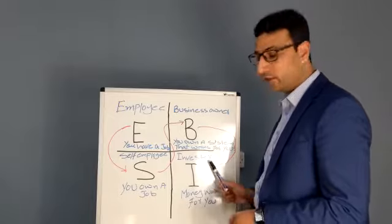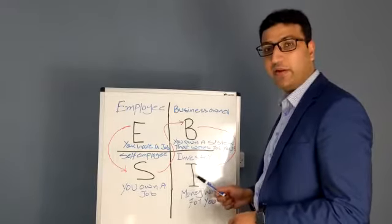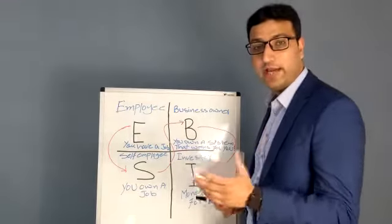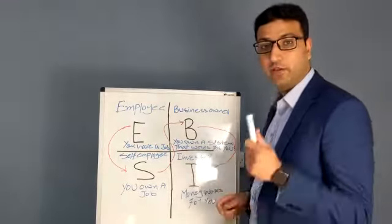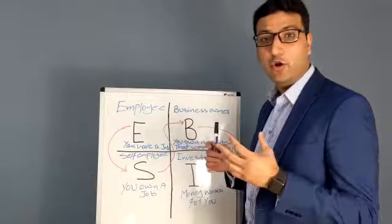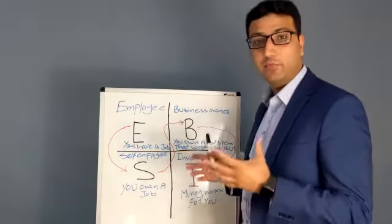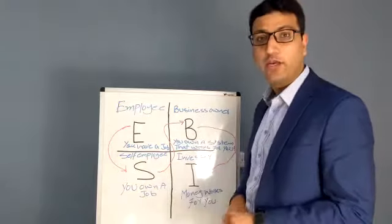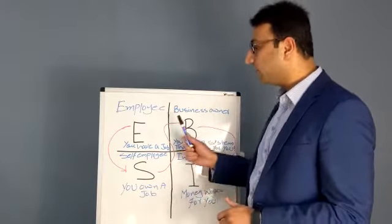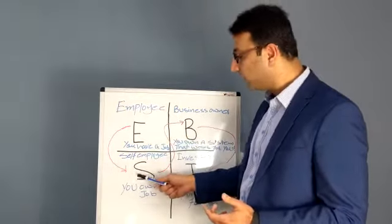But this is the important category - it's basically investor. Money works for you. These people pay less tax or zero tax. The problem is our school system is flawed - in our schools they are not teaching us how to be an investor, how to make money, how smart we can work to get there, how we need to be from there to there.